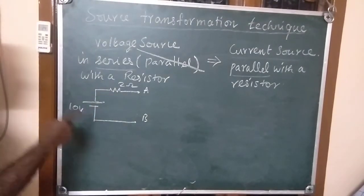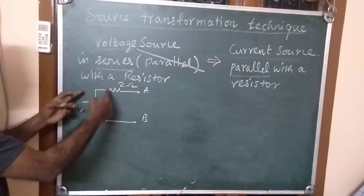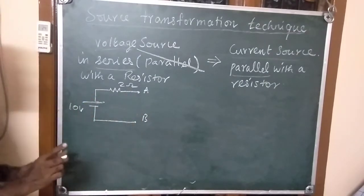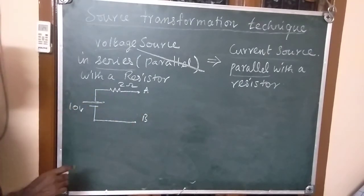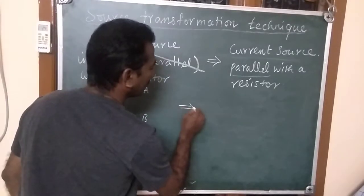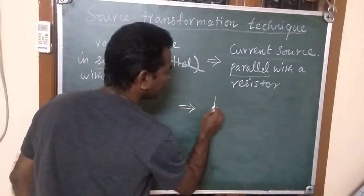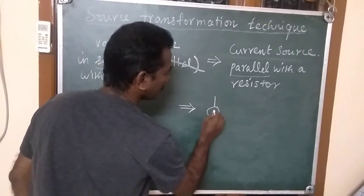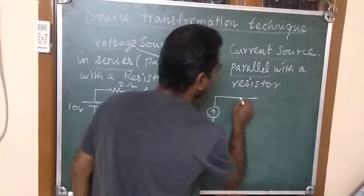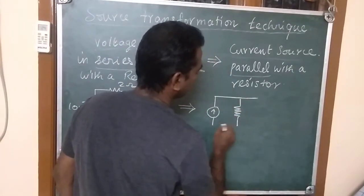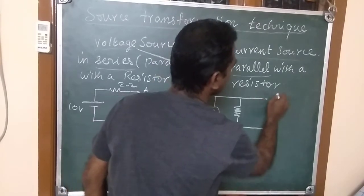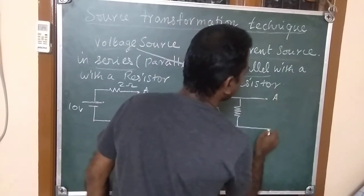The resistor and voltage source are in series because two ends are connected and the other two ends are not connected. This can be converted into a current source parallel with a resistor across the same terminals A and B.